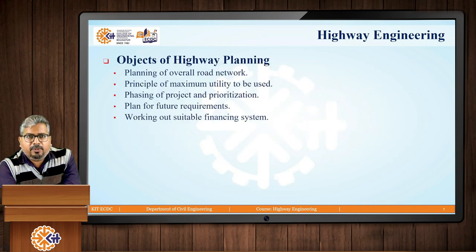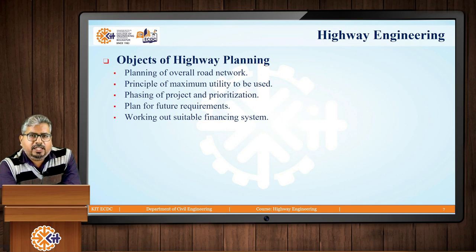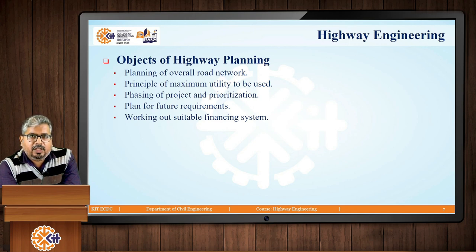Next are the objectives of highway planning. The first is the planning of the overall road network, which deals with efficient and safer traffic flow and cost optimization. The main focus is that initial construction cost, maintenance cost, pavement renewal cost, and operation cost should be as minimum as possible. Road design networks should reduce congestion and signal optimization can reduce accident chances.